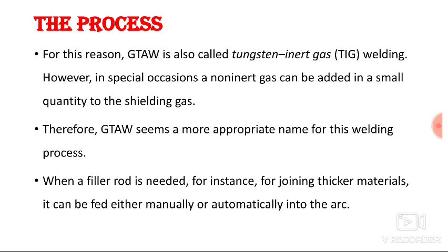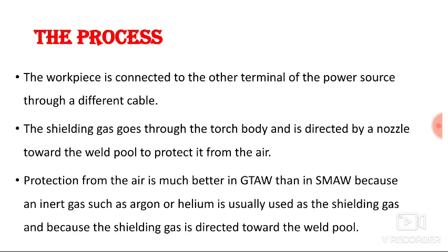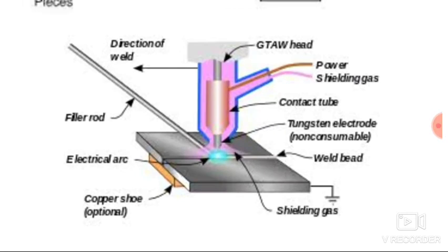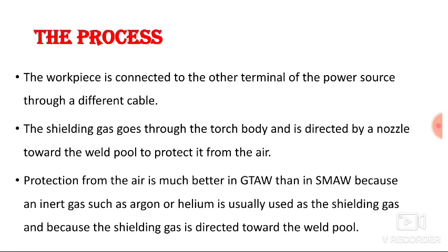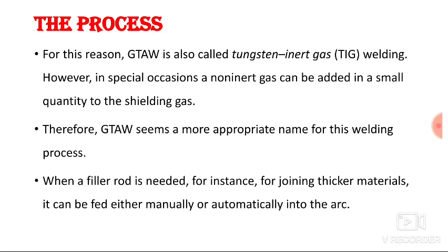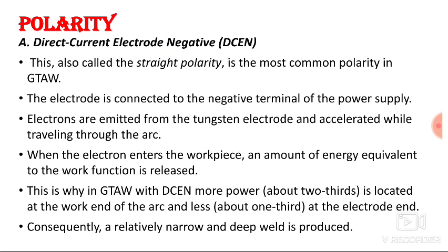When a filler rod is needed — for instance, for joining a thicker metal — it can be fed either manually or automatically into the arc. Whenever we want to join a thicker plate, we have to use a filler rod, supplied either manually or automatically. This is the entire process for gas tungsten arc welding.